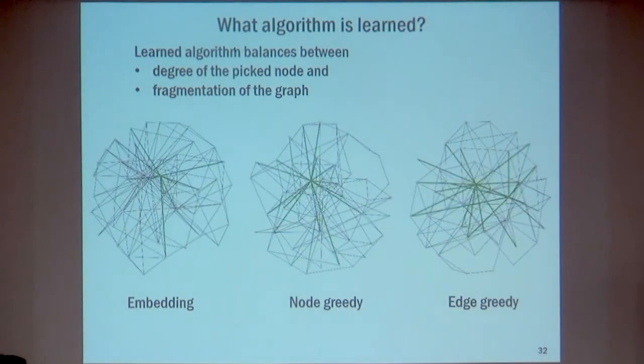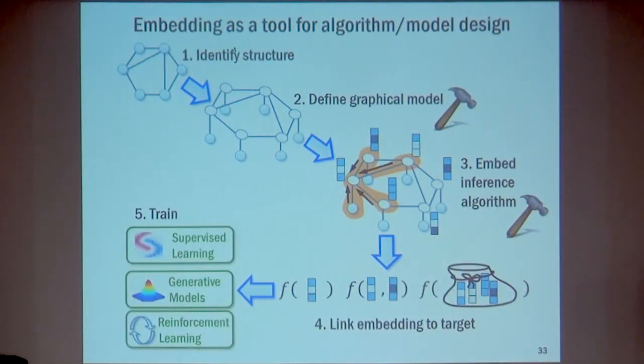The key idea: take structured data and think about performing graphical model inference on it, capturing node information as situated in the network along with additional node and edge information. Parameterize these inference algorithms using neural nets that iterate along the graph structure, giving a highly structured network. After this iteration, you get vector representations of nodes that you can use for many different tasks including prediction and learning algorithms to solve combinatorial optimization problems.